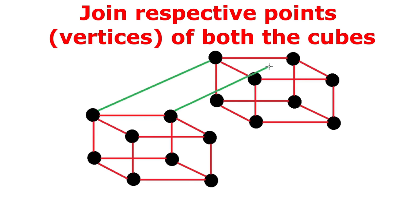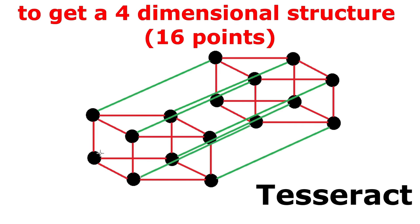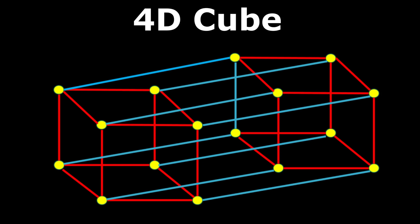If we consider the fourth dimension from the geometrical point of view, then a hypercube is a four dimensional object, also called a tesseract. A hypercube is the four dimensional analog of the cube.